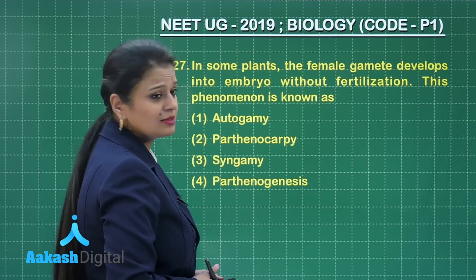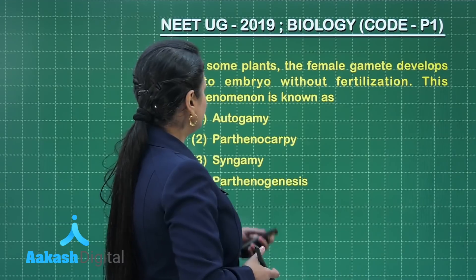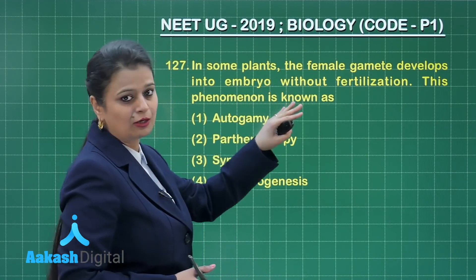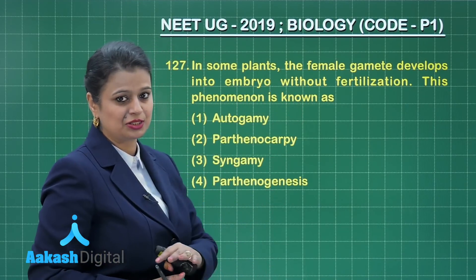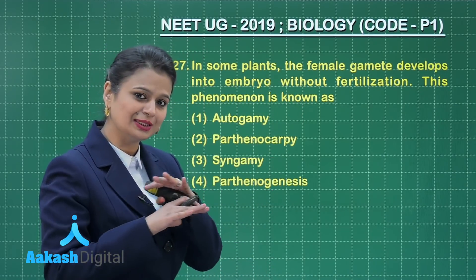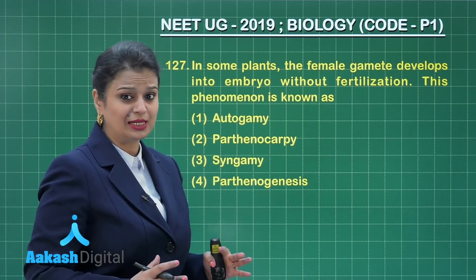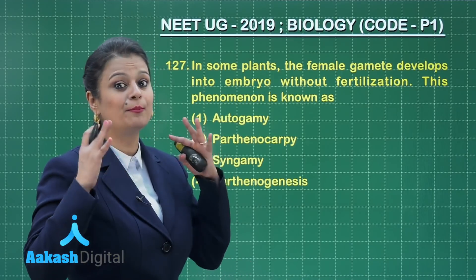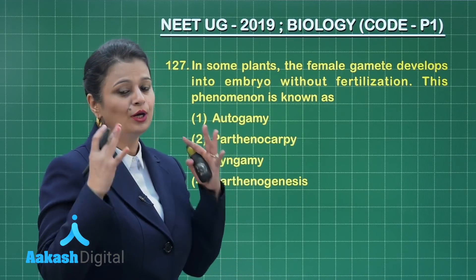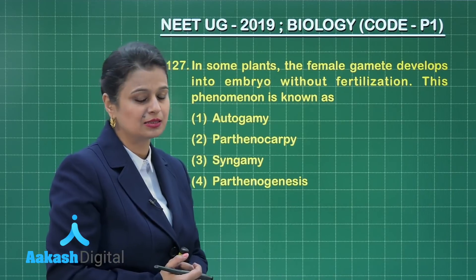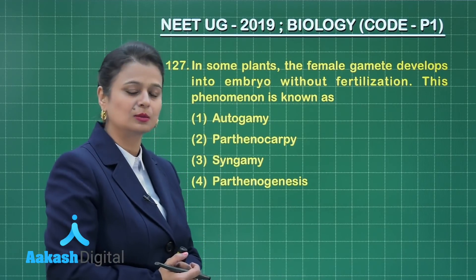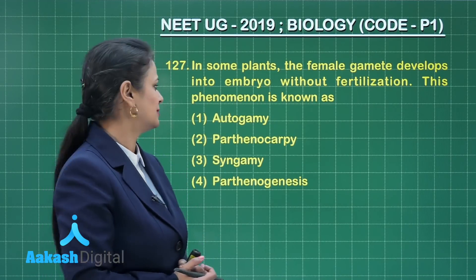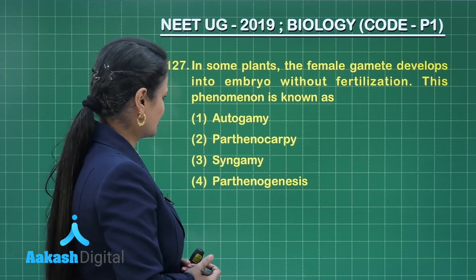Next question: in some plants, the female gamete develops into an embryo without fertilization. So the egg can form an embryo without fertilization — what do you call this phenomenon? This phenomenon is known as parthenogenesis.